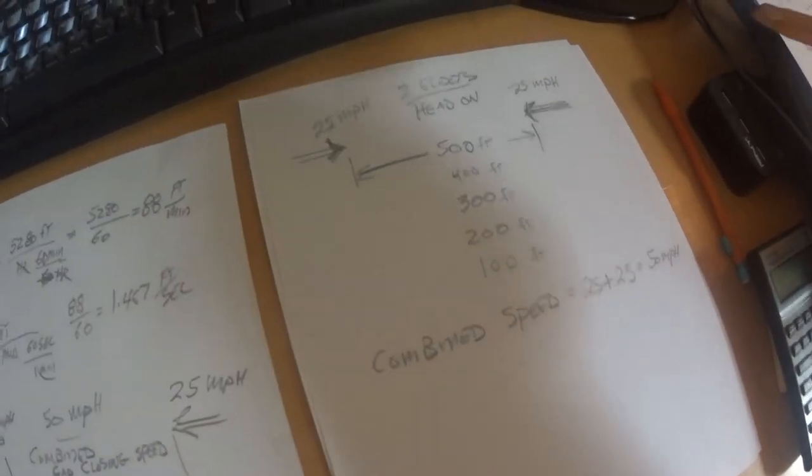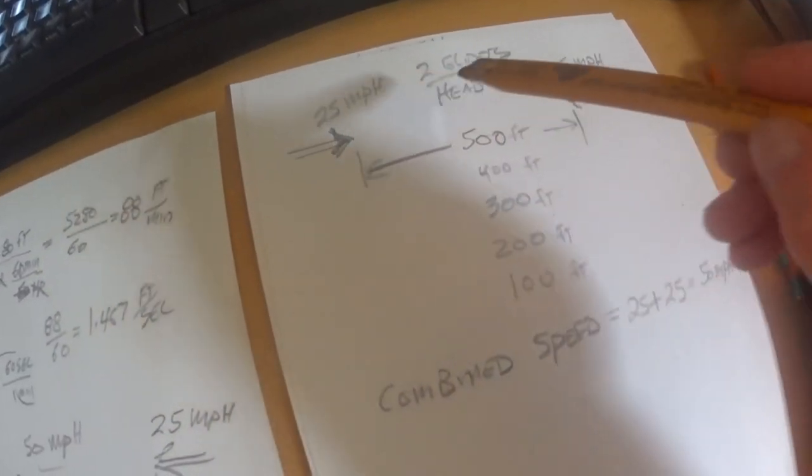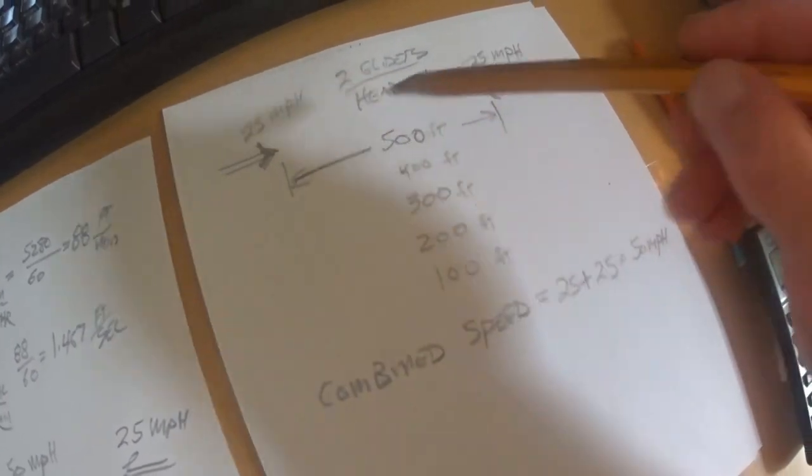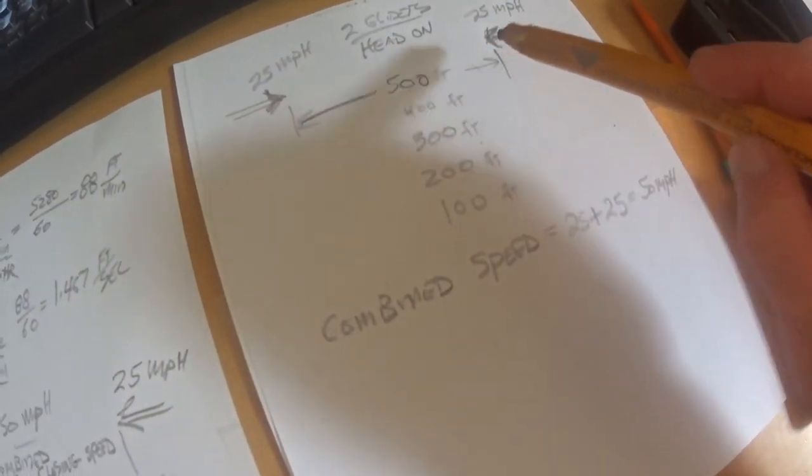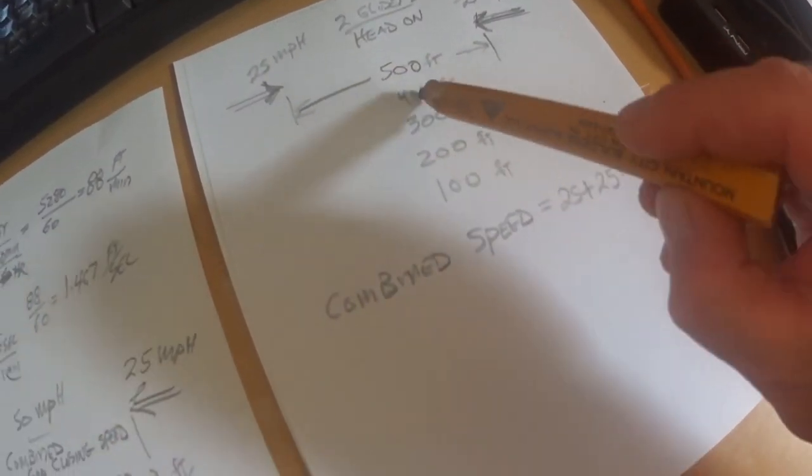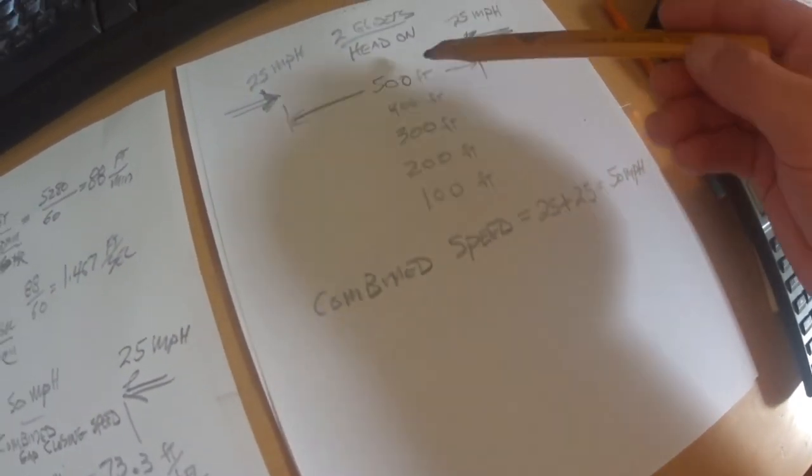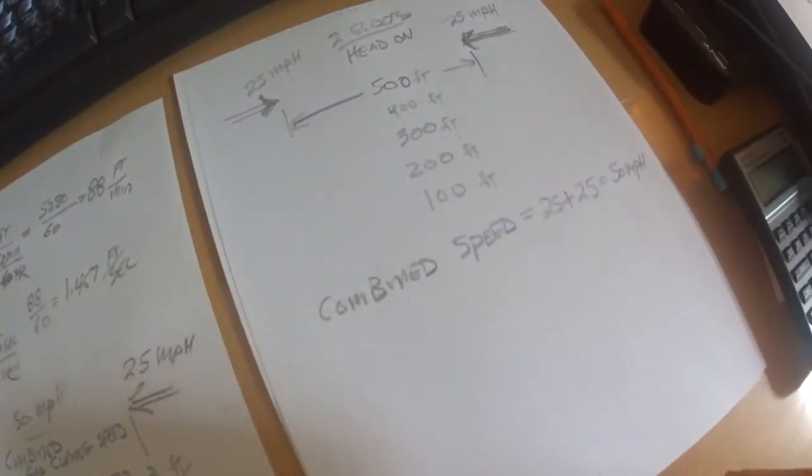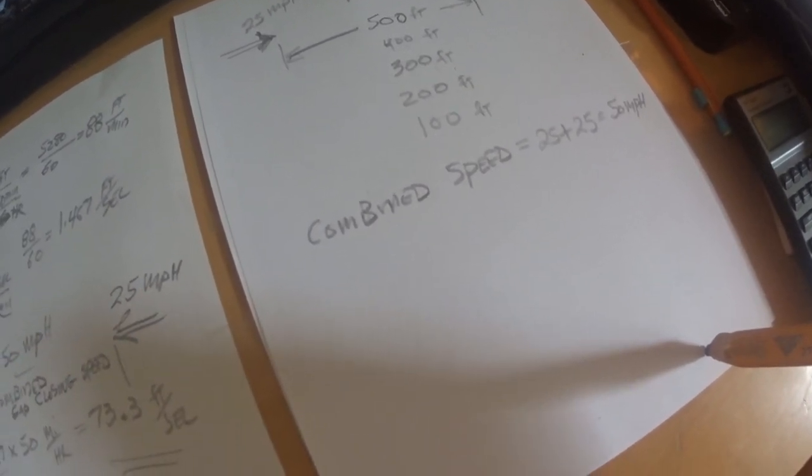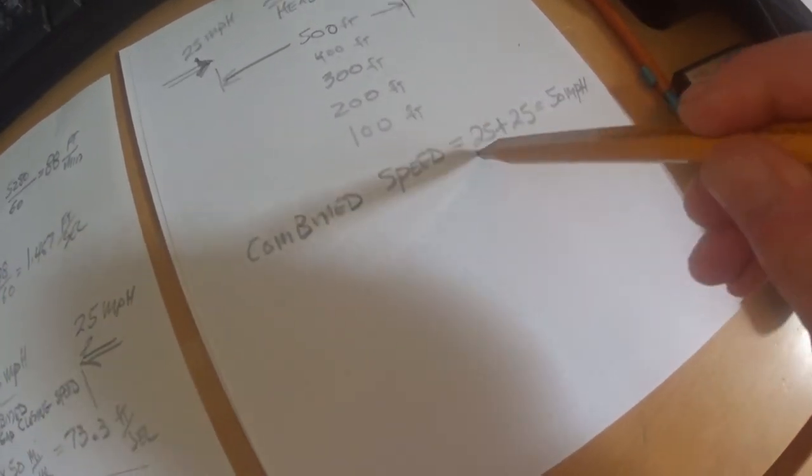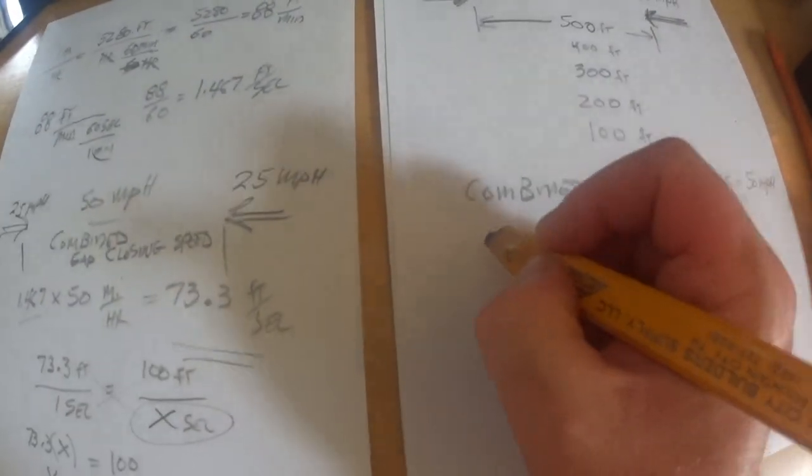So just to recap this, you have two gliders, one coming this way and one coming this way. Each of them are going 25 miles per hour. They're coming at each other head-on. And if this distance between here is 500 feet, or if it's 400, 300, 200, 100, how many seconds does it take for that gap to close up is what I was trying to figure out. And I think I've found a little easier way to figure it out. So the combined speed is 25 plus 25 is 50 miles per hour.